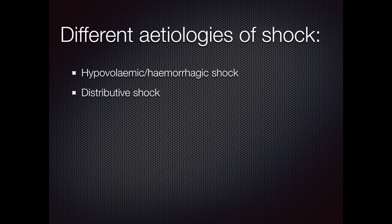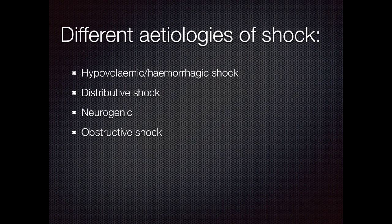Distributive shock is increased vascular permeability, meaning that intravascular volume moves to the extravascular space, causing inadequate circulating volume. Examples of this are sepsis or anaphylaxis. Neurogenic shock is the loss of sympathetic drive due to spinal cord trauma. Obstructive shock is when there is inadequate filling of the heart or inadequate preload, meaning that the cardiac output is not sufficient. Examples of this are cardiac tamponade or tension pneumothorax.